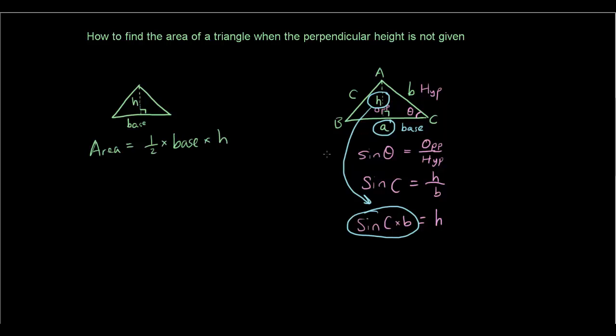I'm going to substitute these into my area of a triangle equation. So the area is half times base, which is a, times h, which is b times sine c.